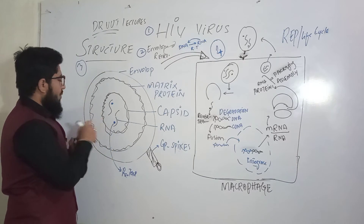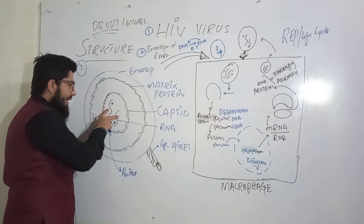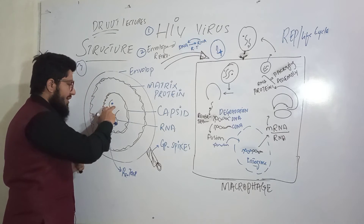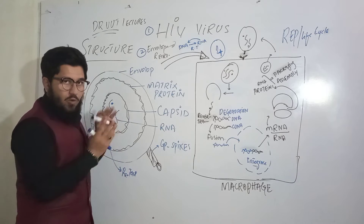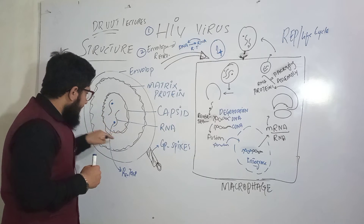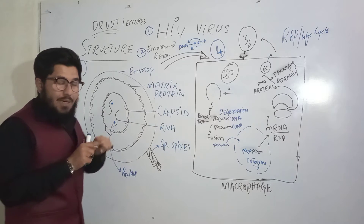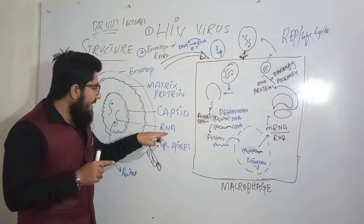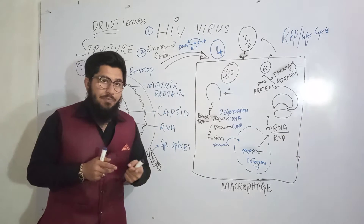Returning to the third point: in the core, we have two single-stranded RNA molecules along with reverse transcriptase. Then, surrounding the core, there is a covering named the capsid, which is a protein layer. Collectively, the RNA plus the capsid are named the nucleocapsid.